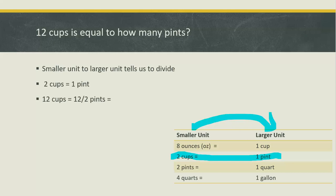To convert from cups to pints, we're going to divide by two. So 12 cups equals 12 divided by two pints. This means 12 cups equals six pints.